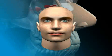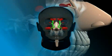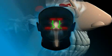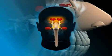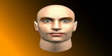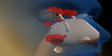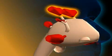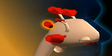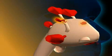The paranasal sinuses form a cave system within our skull, around the nose area. The nasal cavities are connected to the sinuses by small passages. One distinguishes maxillary sinuses, frontal sinuses, sphenoidal sinuses, and ethmoidal cells.